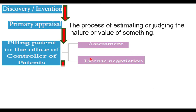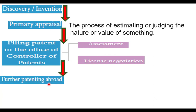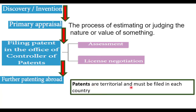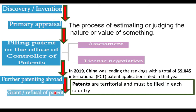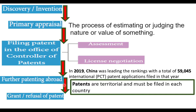License negotiation involves discussion between the applicant and the officers. Further, patenting abroad — a patent is territorial and must be filed in each country. If we want to get a patent for a particular invention in another country, we have to file another application in that country. In the year 2019, 59,000 international patent applications were filed in China — the highest in that year. Once the filed application is assessed, the patent will be granted. When the information provided is insufficient, the patent will be refused.